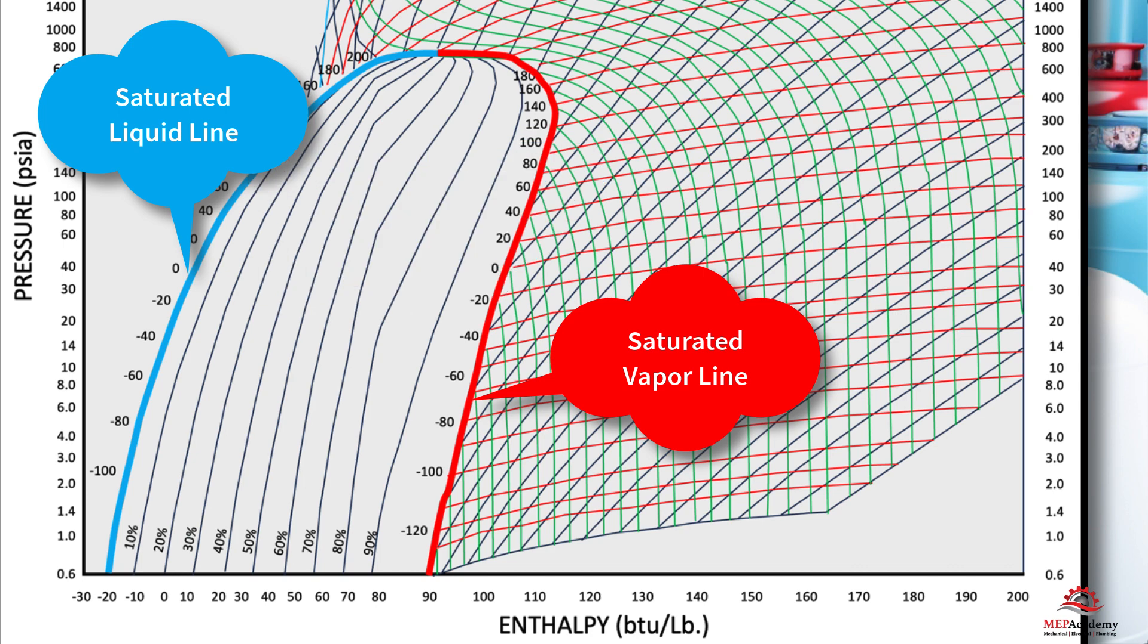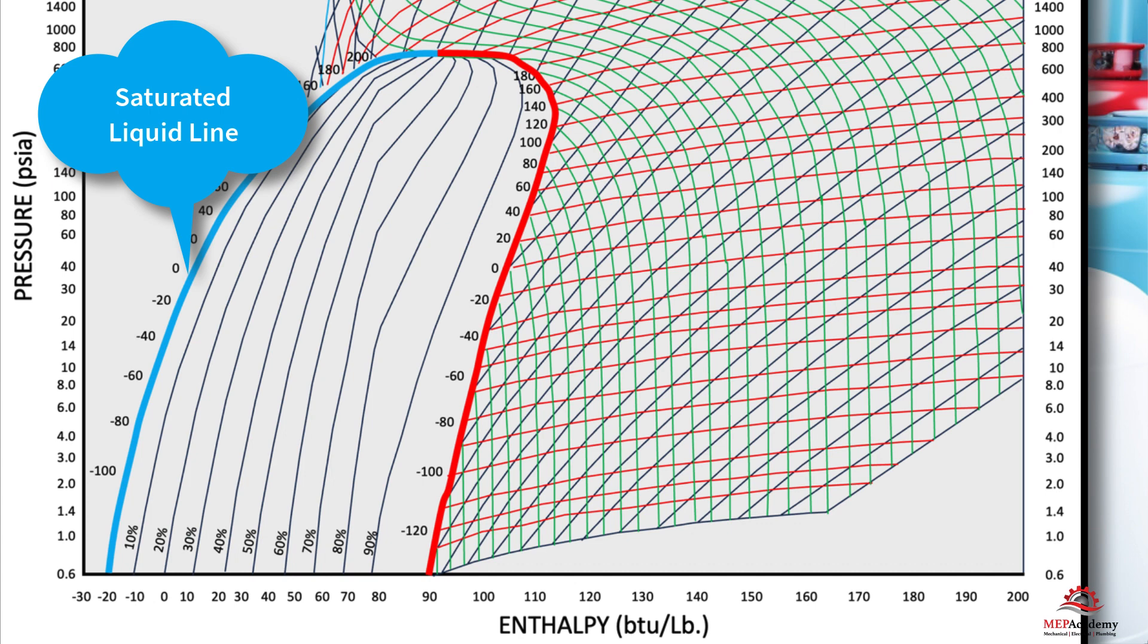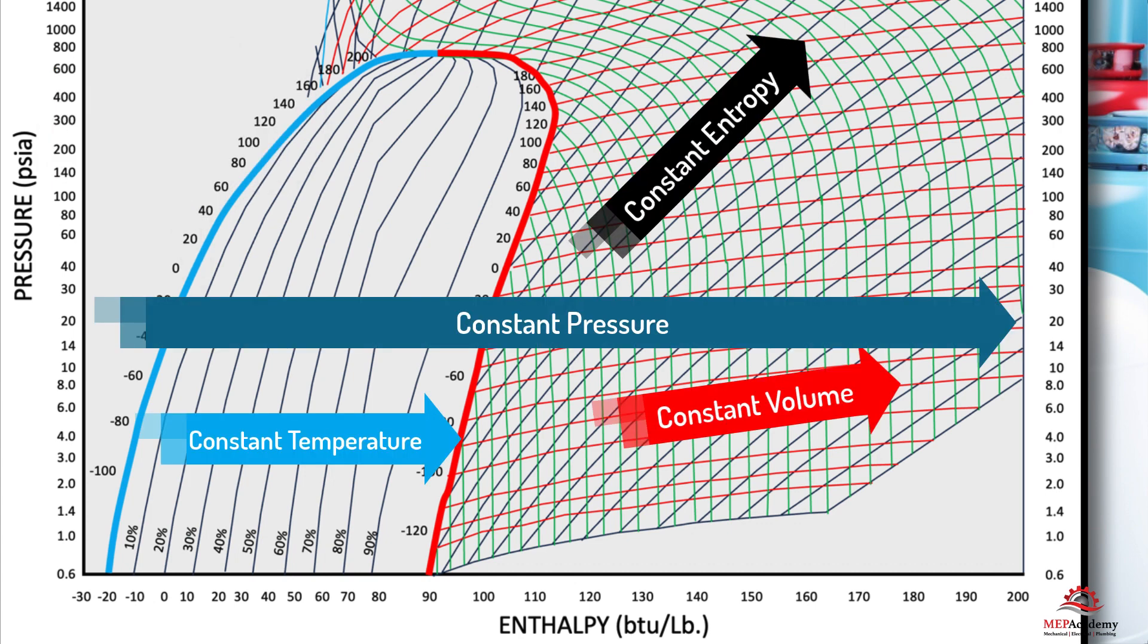Additional information. Some PH charts may include additional data points or curves, such as lines of constant entropy or lines representing superheated vapor or sub-cooled liquid regions. Familiarize yourself with any such features to extract more information from the chart.